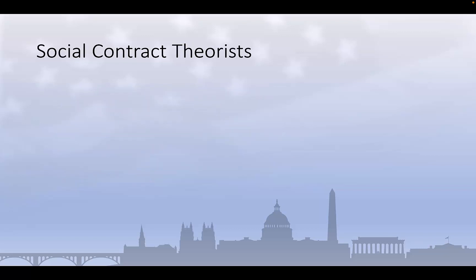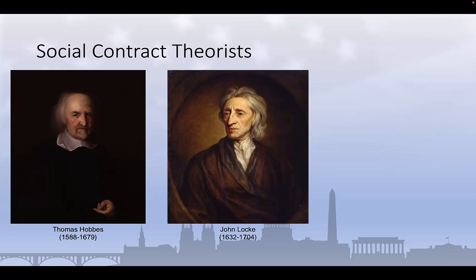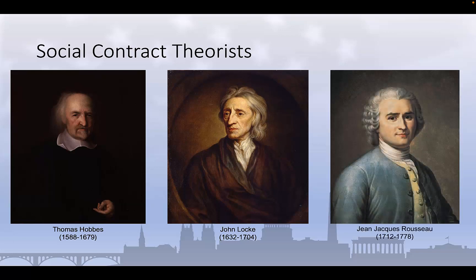At the time the Declaration of Independence was drafted, there were three primary social contract theorists, each of which put a slightly different spin on the state of nature and the implications of the contract. Thomas Hobbes viewed the social contract as a one-time event in which individuals collectively granted the state the right of rule, effectively giving up freedom for safety and security. John Locke, who was probably the most directly influential in the thinking of the founders on the topic, believed that the government's legitimacy is derived from the citizens' delegation of authority and power to the state, and that importantly, that delegation of authority could be revoked if the state no longer operated in the interests of the people. Finally, the French political theorist Jean-Jacques Rousseau took a more collectivist approach to the social contract, emphasizing the importance of the general will, which reversed Hobbes' and Locke's more individualistic approach.